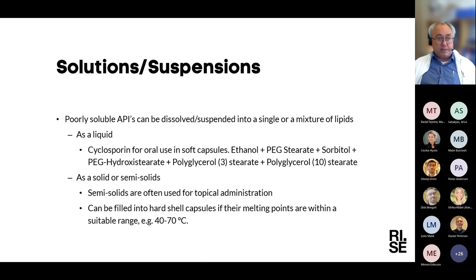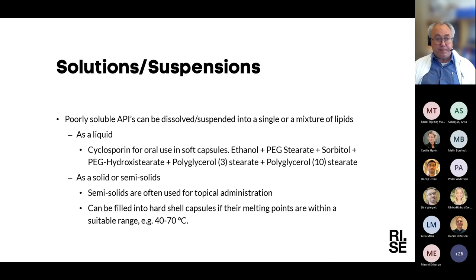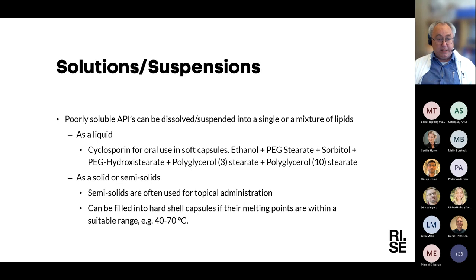Solutions and suspensions have been used quite a lot for many poorly soluble APIs. One example is cyclosporine, which is formulated as a liquid in a mix of different fats. Semi-solids such as creams or ointments are also common. These systems can be filled into hard shell capsules if they have a suitable melting point, or into soft capsules for more liquid forms. Cyclosporine is also available as an oral solution.